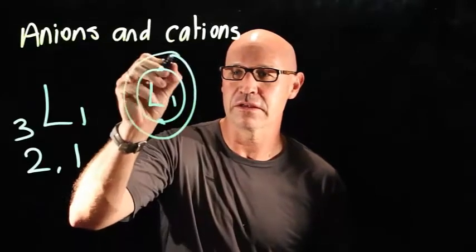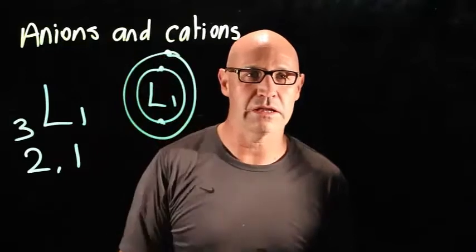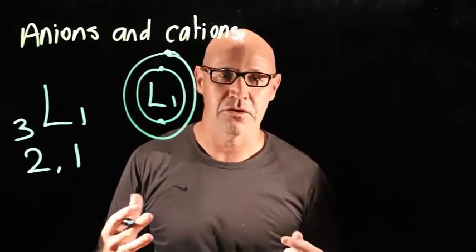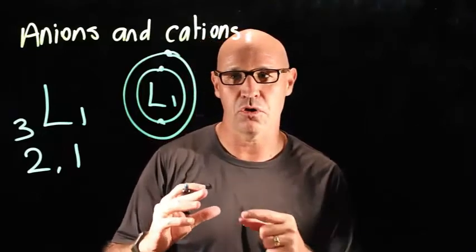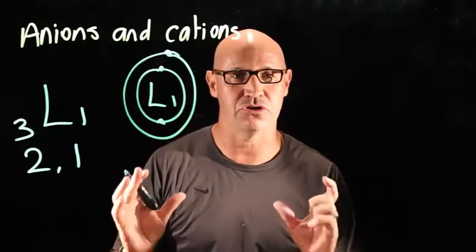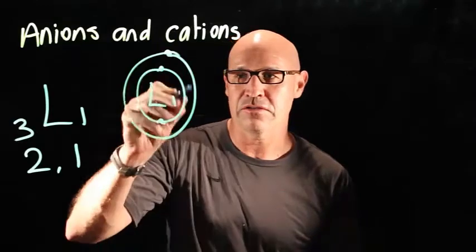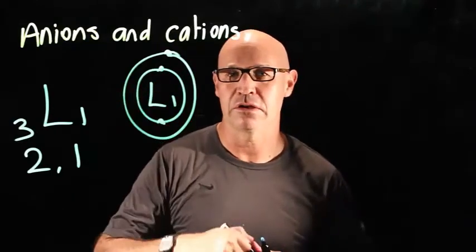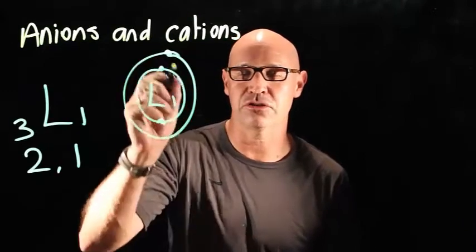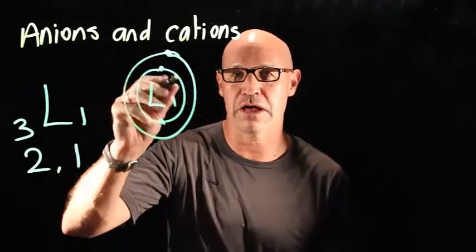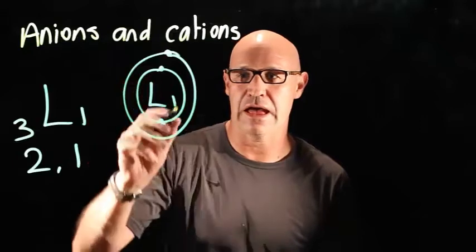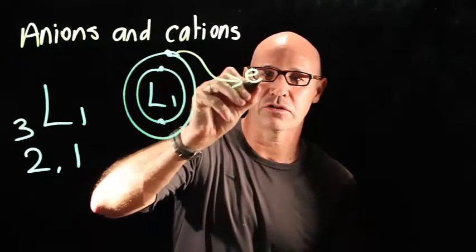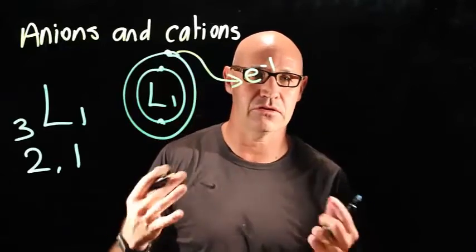So as you can see, it has one electron in its outer shell. Because atoms have a tendency to want a complete outer shell, this lithium atom has a tendency to want to donate this electron in its outer shell. So it removes that shell and it's got a full outer shell here. So it donates this electron to another atom under certain conditions.